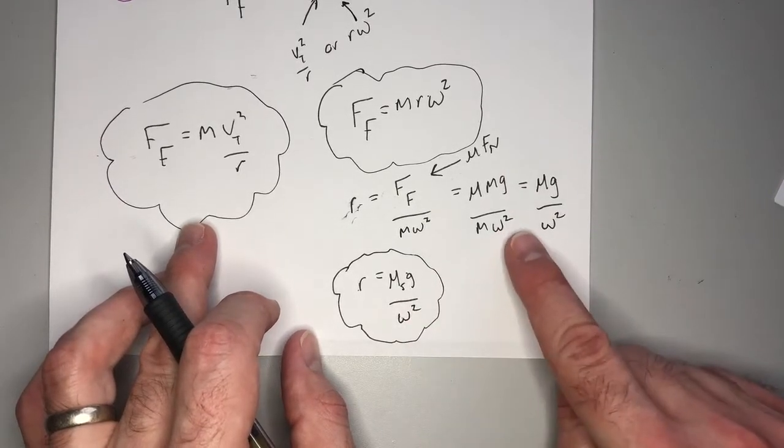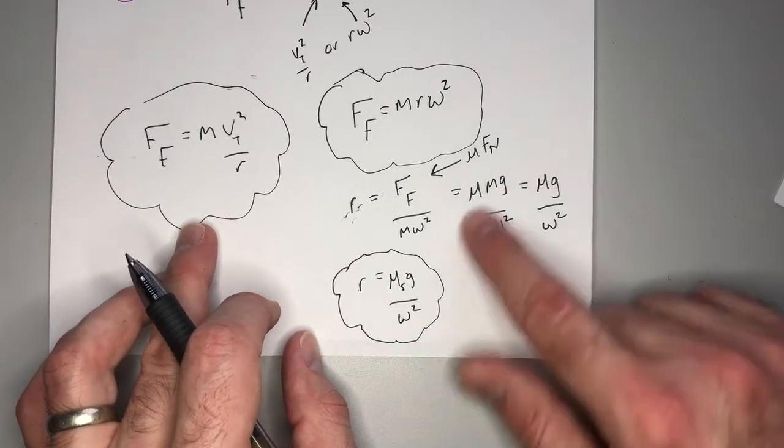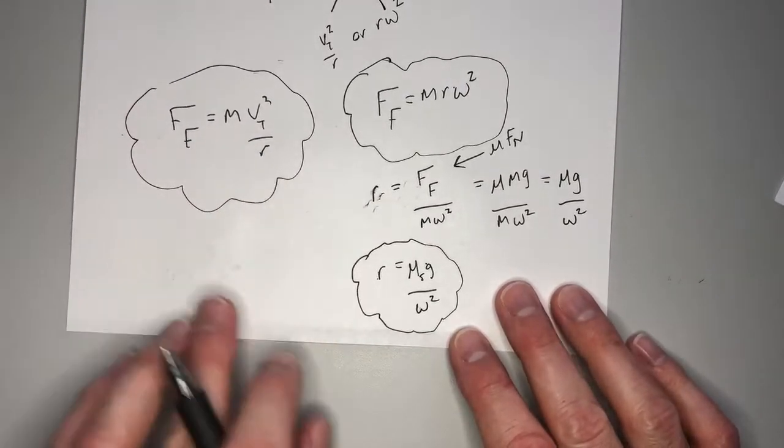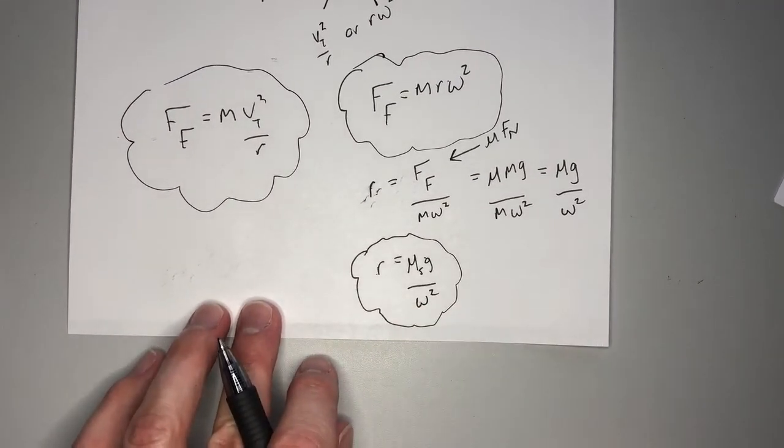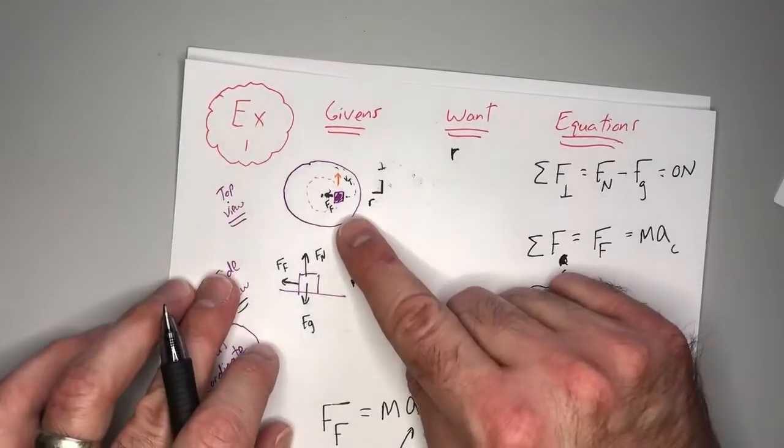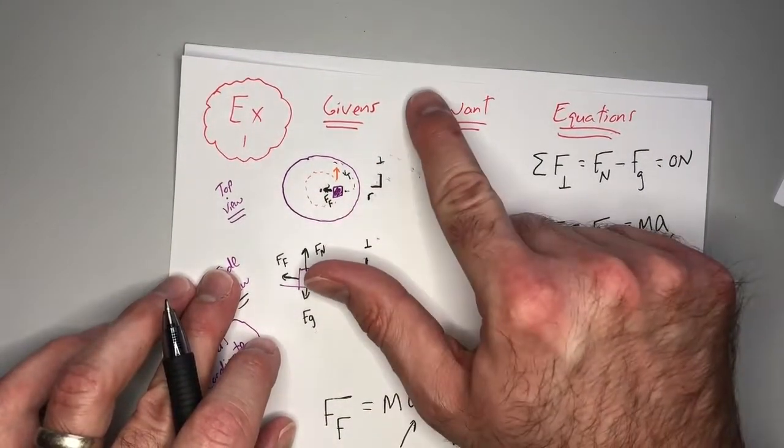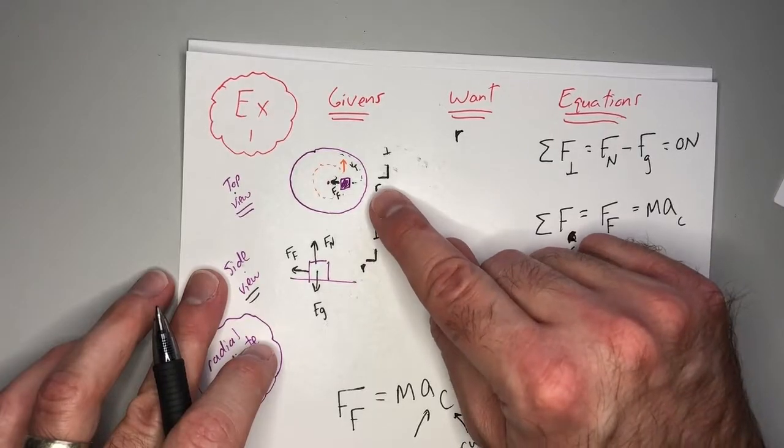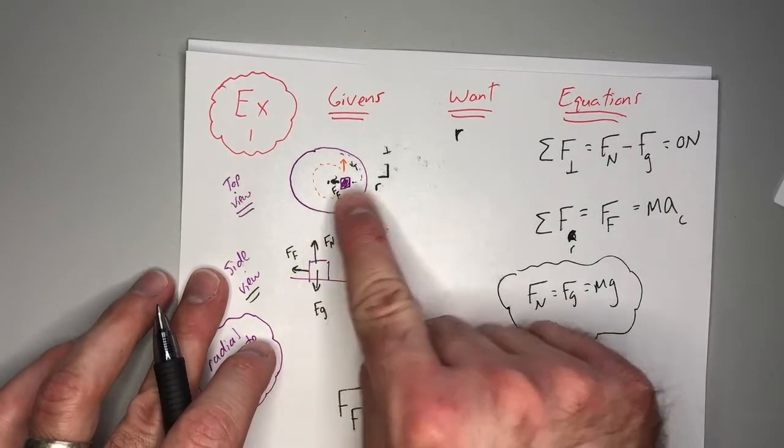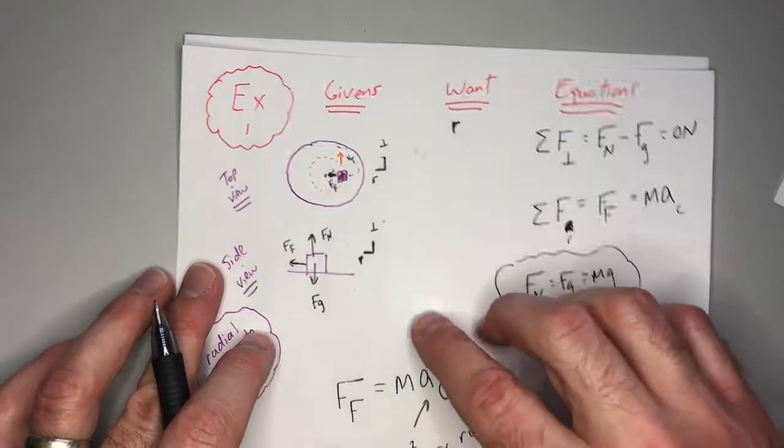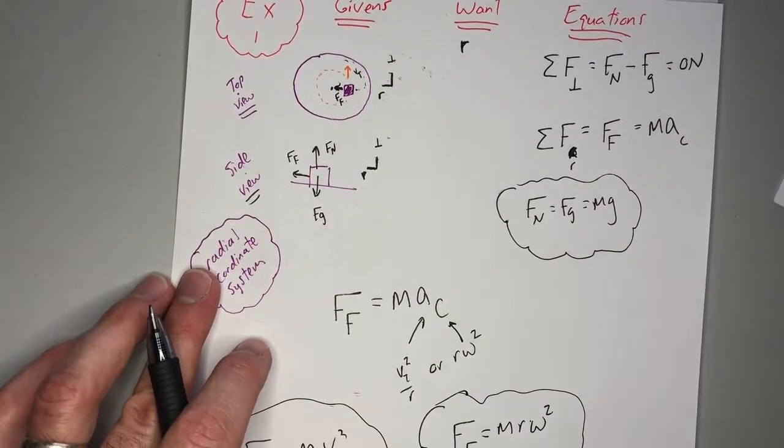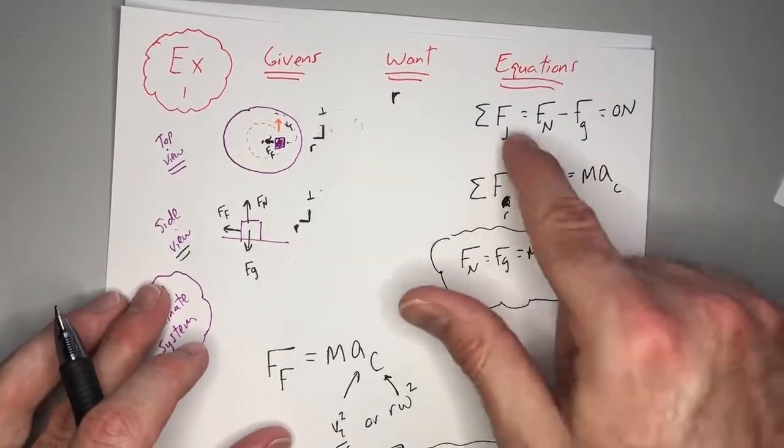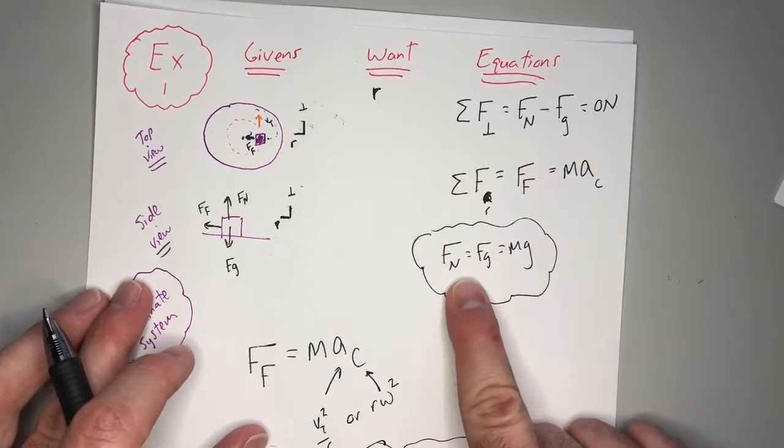One thing to note, your radius right there does not depend on the mass of the object you're talking about because our M's went bye-bye. You can play the same game with this one, but let's stop our video right here just for now. So the big steps, draw a picture, label your forces, pick your coordinate system. Our coordinate system in this case, we have the radial direction, which is defined as inward, as positive, and the perpendicular direction, which is up and down. And we drew a top view and a side view because that was helpful.